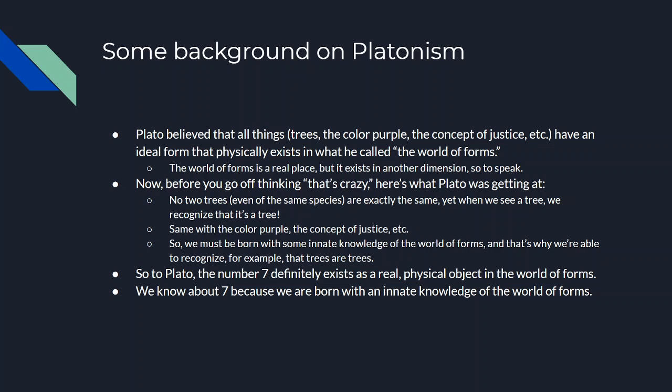Plato believed that all things — trees, the color purple, the concept of justice — all things have an ideal form that physically exists in what he called the world of forms. The world of forms is a real place filled with real things that are the ideal forms of everything we sort of see shadows of in our world — or like bad copies of in our world. Even though it's a real place, you could think of it as existing in another dimension, so we can't actually interact with it. That kind of seems wacky at first — where is this guy coming from?